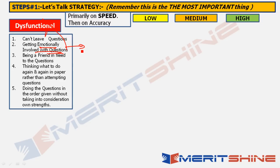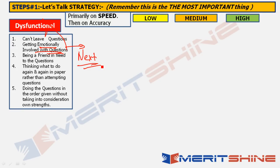The second dysfunctional characteristic: getting emotionally involved with a question. Even if you have done that question many times at home and you're not getting it in the exam, don't get emotionally involved. Don't think 'Oh my God, I've done this question, why am I not able to do it here?' No such negative thoughts. If a question isn't striking you, just move on to the next one.